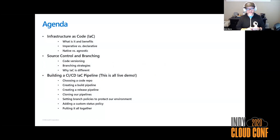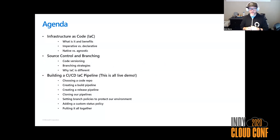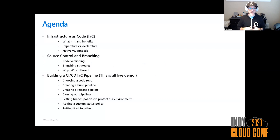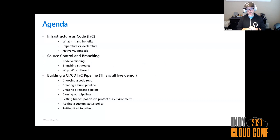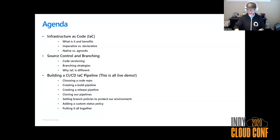So first, we're going to dive into infrastructure as code — what it is, what are the benefits. We'll talk a little bit about imperative versus declarative syntax and language, source control and branching, and then everything underneath that is a demo. We're going to be moving quick once we get to that point, because there is a lot we are going to build in a relatively short amount of time.